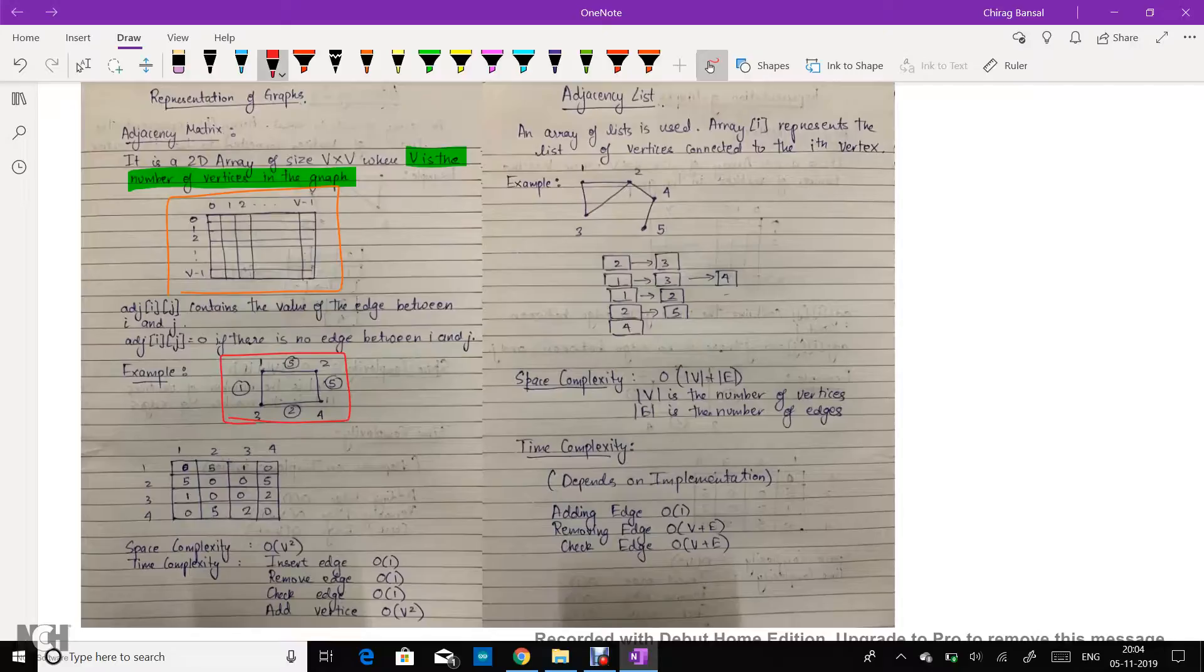Here we have an edge between 1 and 2, 2 and 4, 4 and 3, and 3 and 1. Therefore we get the adjacency matrix as this.